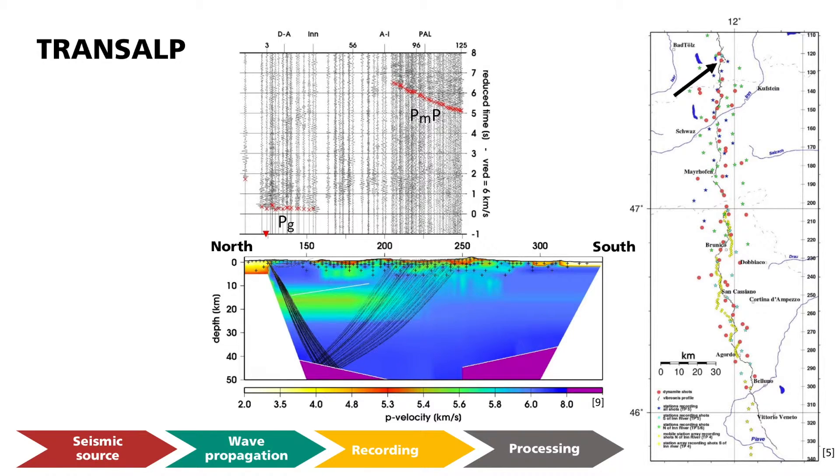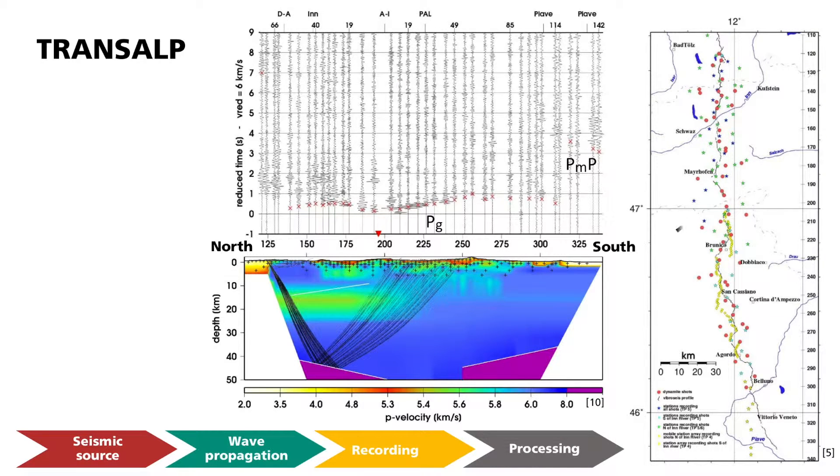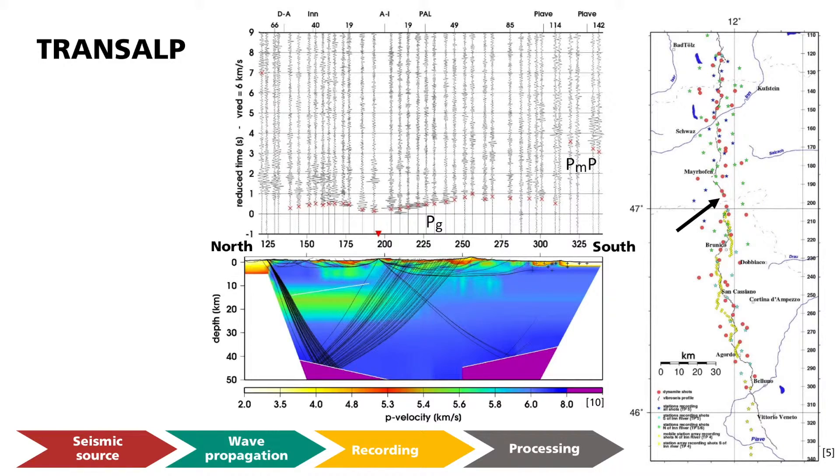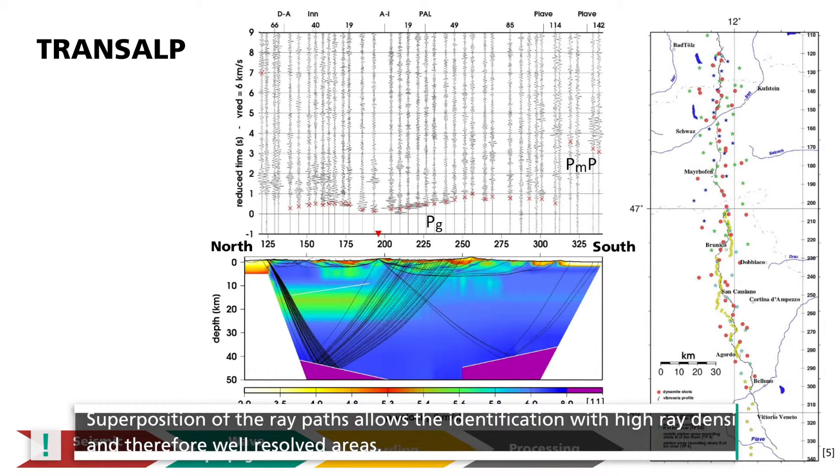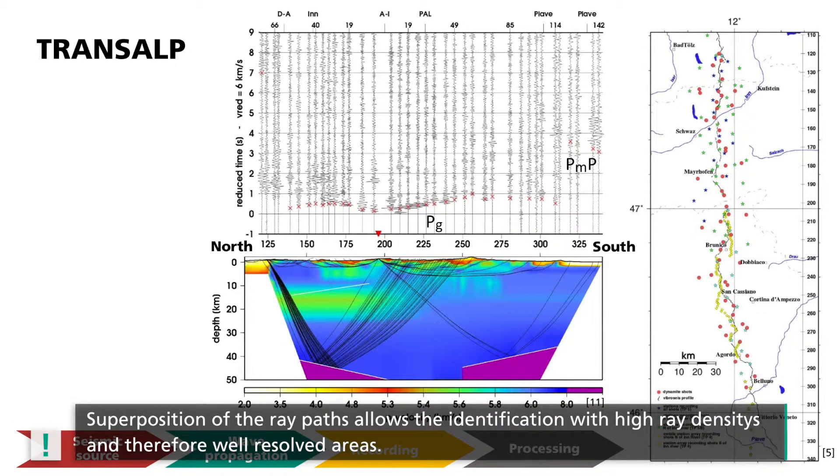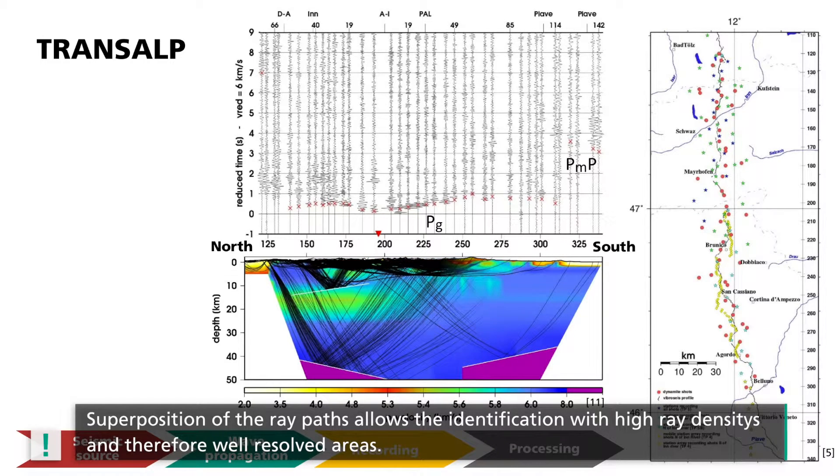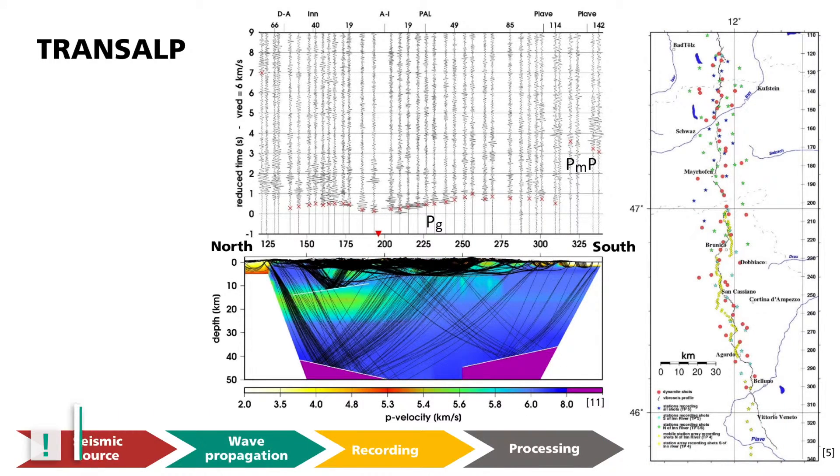The second profile shows the recordings from shots fired near the Italian-Austrian border. Here, too, the subsurface model can easily explain the travel times. Two deep, strong reflectors in the north and the south can clearly be seen. Application of the modeled ray path allows the identification with high ray density and therefore good resolution.